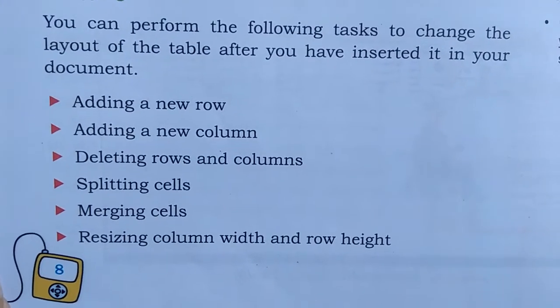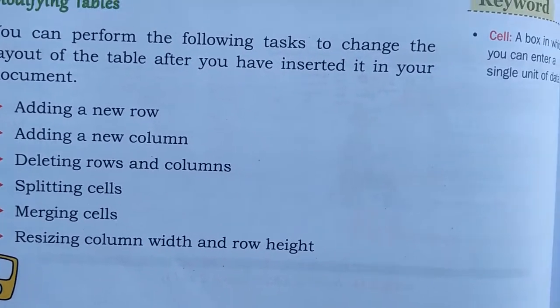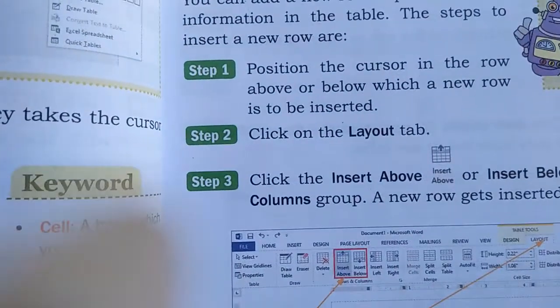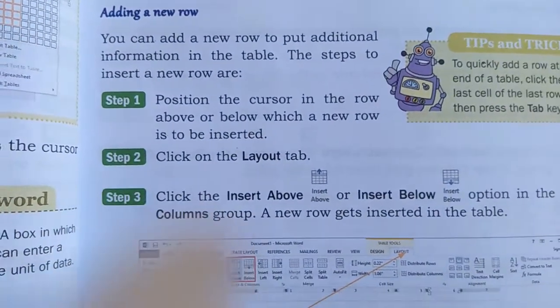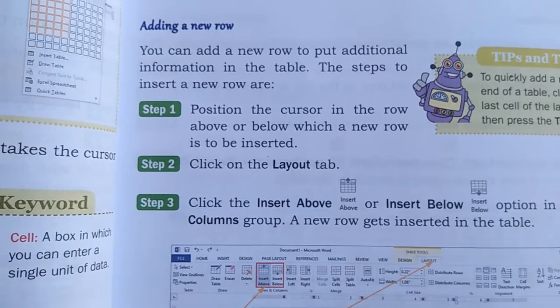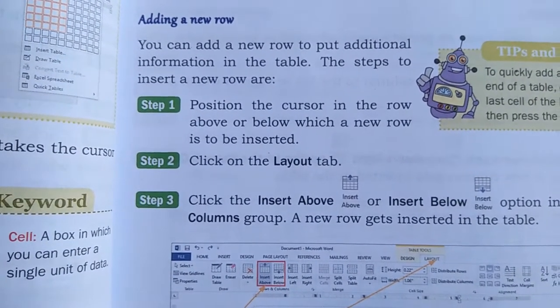The first one is adding row and column. If we want to add a new row or add a new column, we have the same difference where we have to add.